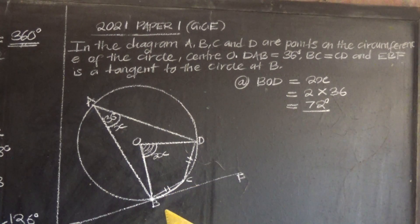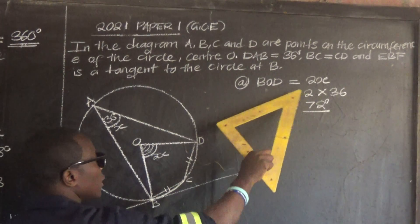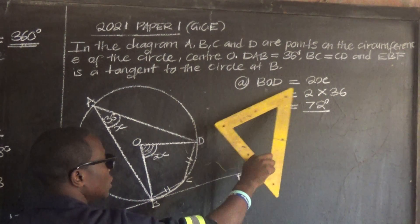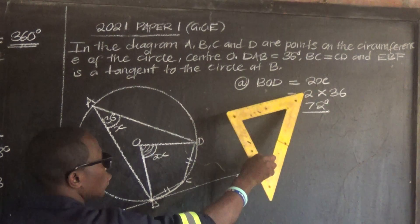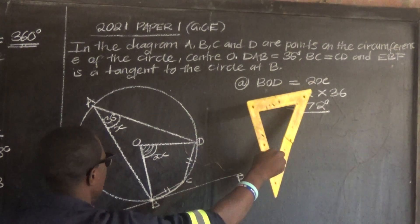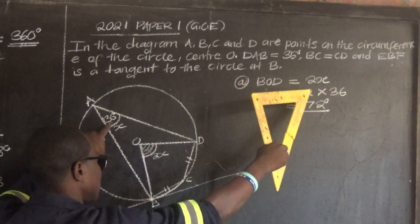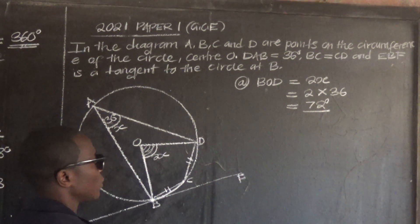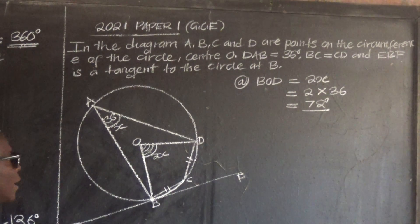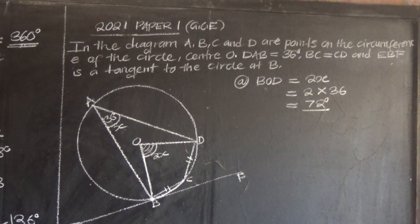You can also state it directly: BOD is equal to 2 times the angle on the circumference, which is 36, and you get 72 degrees.